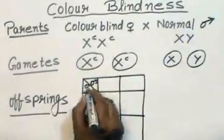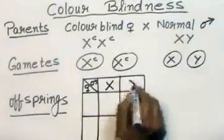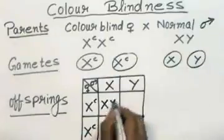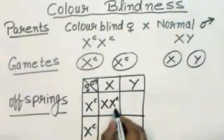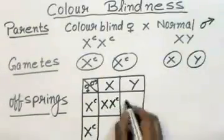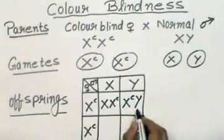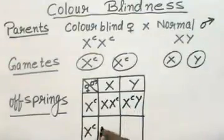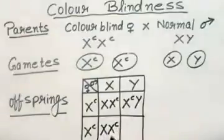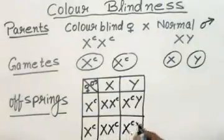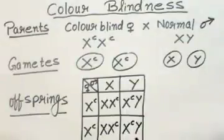Male, female. Here, one genotype represents a carrier female. In this case, a colorblind male. This again represents a carrier female, and this genotype represents a colorblind male.